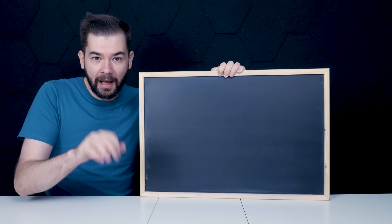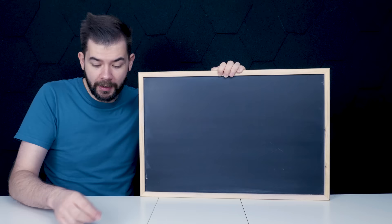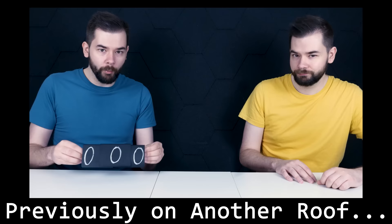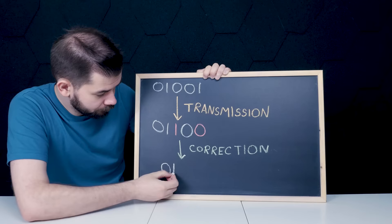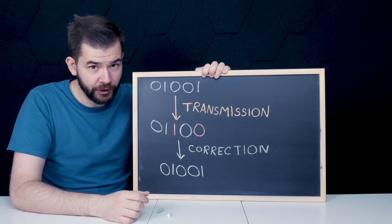And the first step to understanding the Golay Code is to understand, believe it or not, codes. Because in mathematics, code means something quite specific. As brief motivation, we're interested in the problem of transmitting information, but we want to do so in such a way that we deal with any errors that occur during transmission. Clever codes know when errors have occurred — they can detect errors. Cleverer codes can correct them.